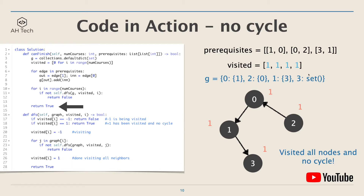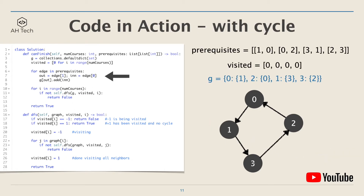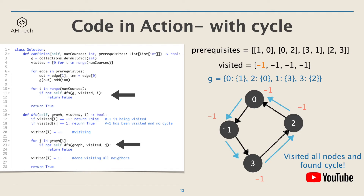But what if we tweak it a little bit and add an edge from node 3 to node 2? Then the whole graph becomes one big cycle. We start DFS from node 0 again and flag all nodes along the DFS path as negative 1. Eventually the DFS call comes back to node 0, whose visited flag is negative 1, meaning we've returned to a node that's currently being visited — we've fallen into a loop. In this case a cycle is detected, so we are not able to finish all the courses.